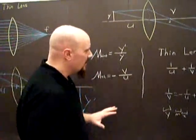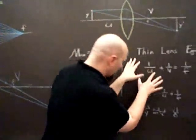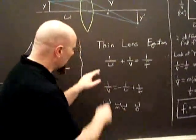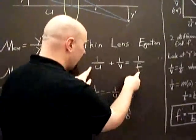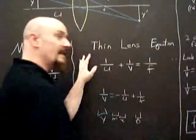So that's magnification. Now we have this: a relationship between U, V, and the focus called the thin lens equation.